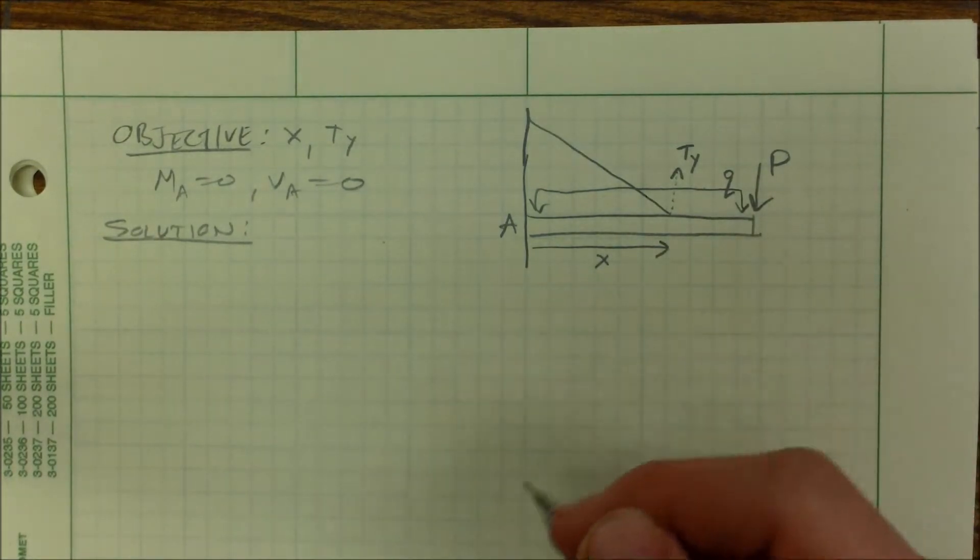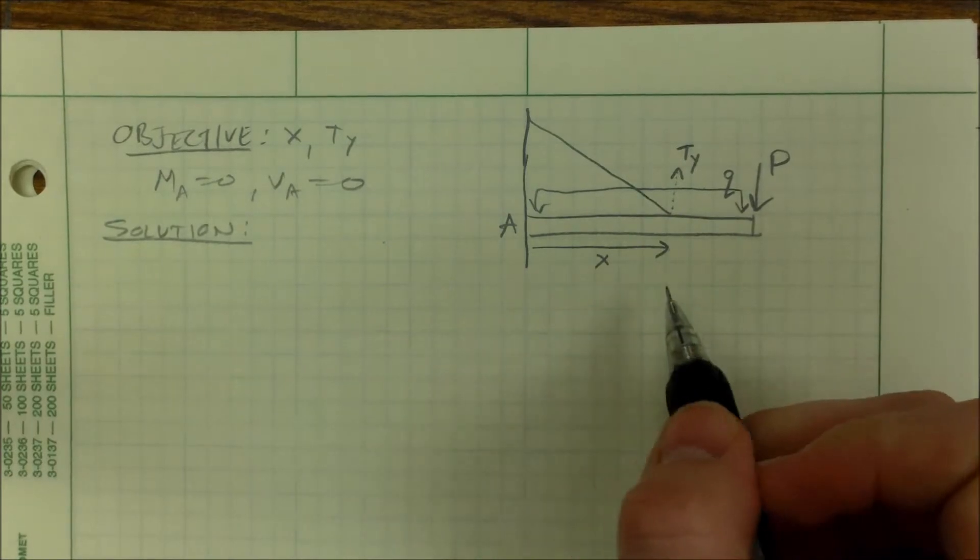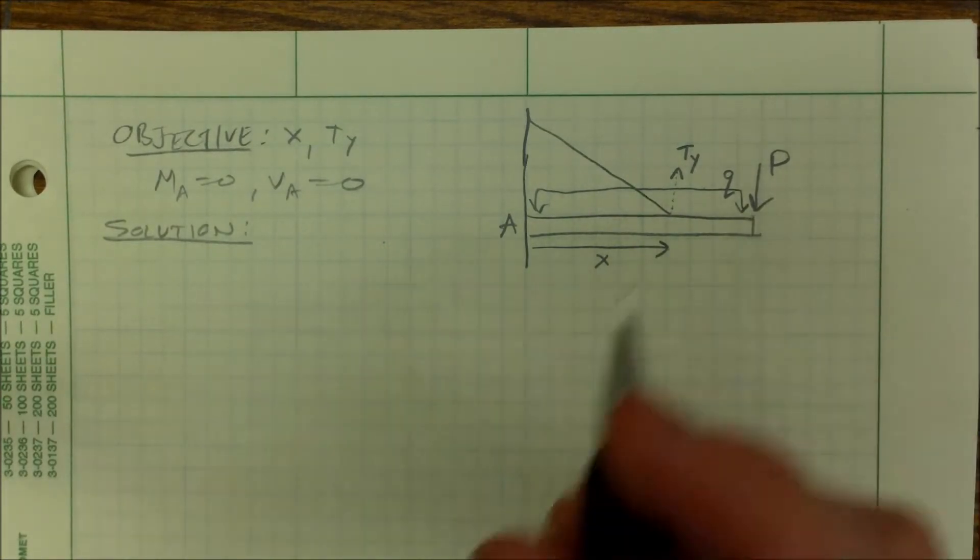Then we set them equal to zero, and then solve for our tension and our X. That'll give us two equations and two unknowns, so let's solve it.